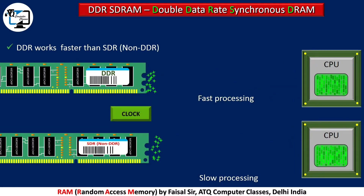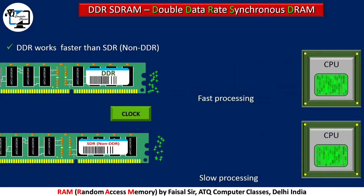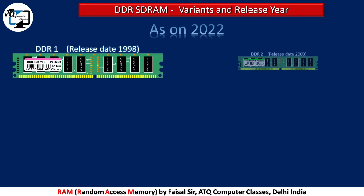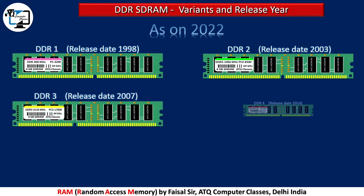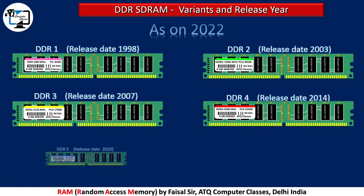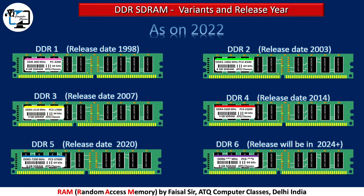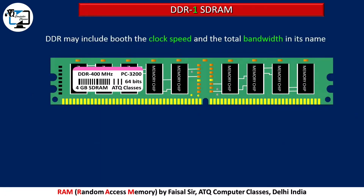DDR sends twice the data in a single clock cycle, and that is also a reason for fast processing. As of 2022, five variants of DDR have been released, and DDR6 will be released in 2024 or later.